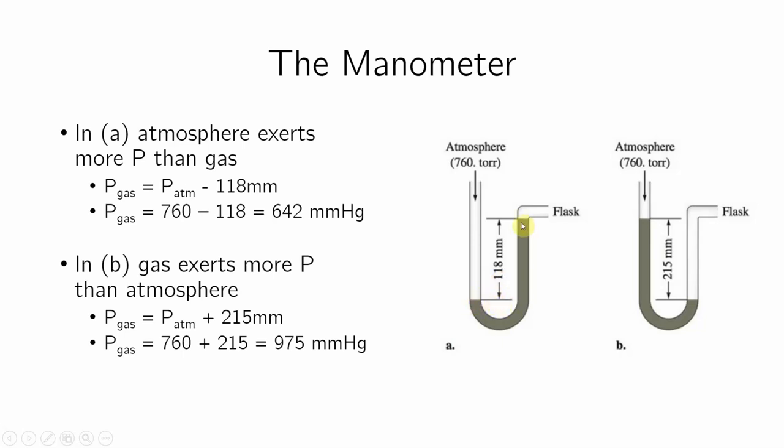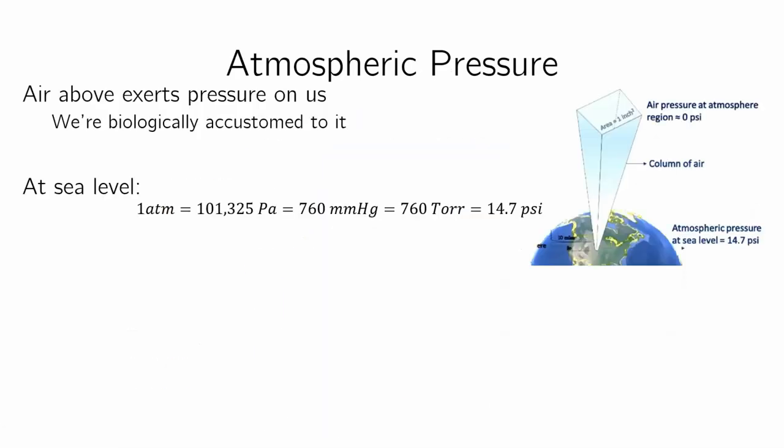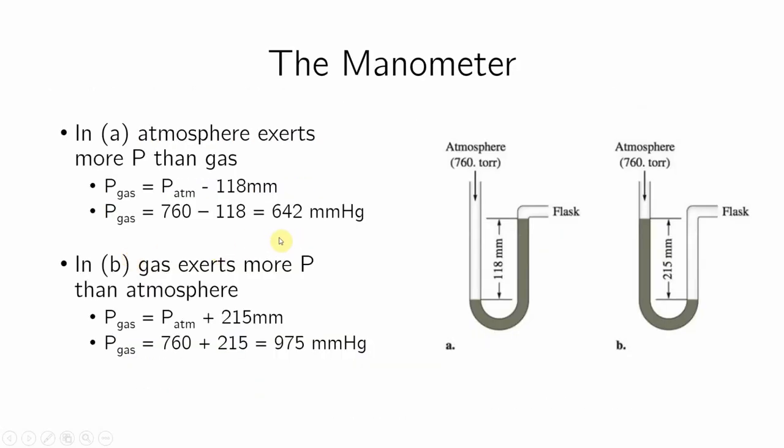And to find the pressure of this gas, I will say, well, it's 760 minus whatever this difference in height is. So I could put this, I could put a ruler here, and I can measure this height. So here it's 118. Someone were to measure this thing and said, okay, between here and here, this thing rose 118. In the absence of everything, it will just be level, as you would know. So because of this, since the pressure of the atmosphere is larger than the pressure of this gas, the pressure of the gas would be lower than 760. So that makes sense, it would be 760 minus 118 would be 642 millimeters of mercury. And I can use this conversion factor here to go from millimeters of mercury to psi or to atmosphere or whatever I want.